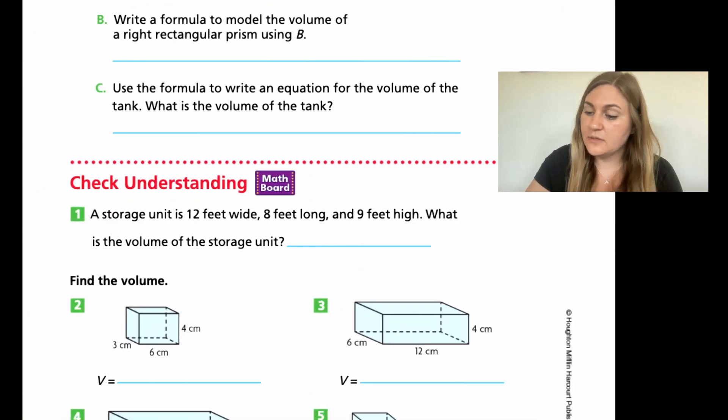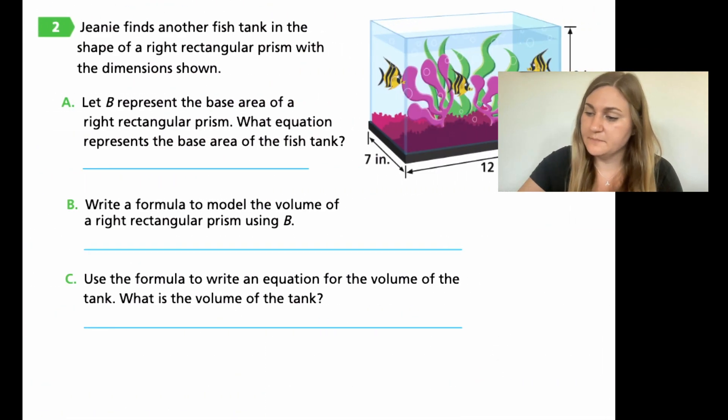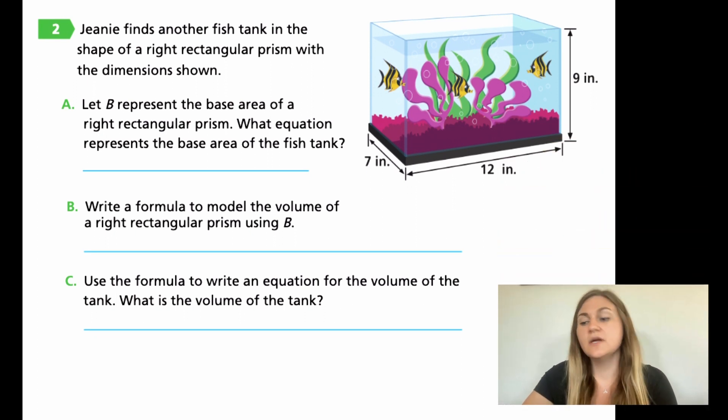We are going to do number 2, but I'm going to zoom up on the problem here. For number 2, it says, Genie finds another fish tank in the shape of a right rectangular prism with the dimension shown. So let B represent the base area of a right rectangular prism. What equation represents the base area of the fish tank? So here, I want you to use B as the base and say equal to, and tell me what two dimensions in this fish tank are equal to the base.